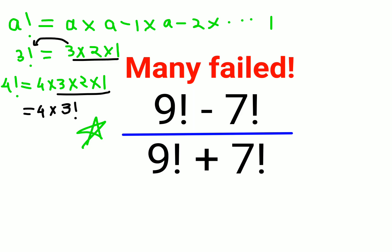Similarly, if you look over here, 9 factorial can be written as 9 into 8 into 7 factorial, correct. And here we will keep the 7 factorial as it is. Here also we will have 9 into 8 into 7 factorial plus 7 factorial.